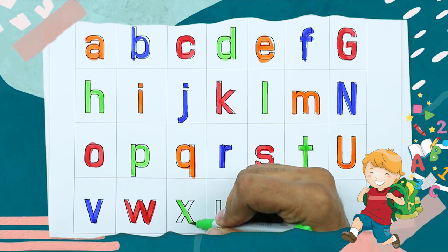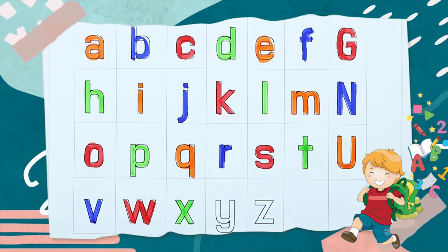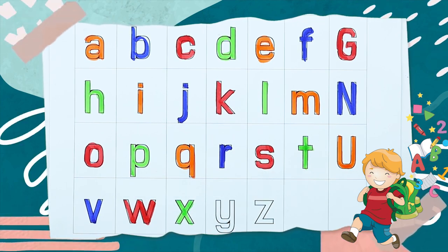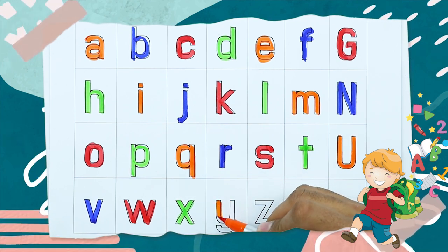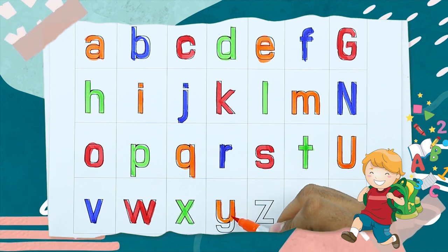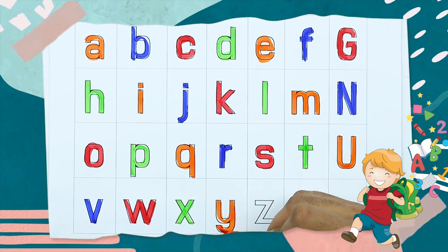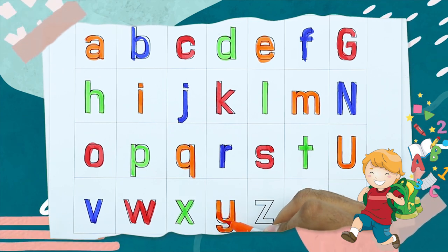X, small x with green color, X for xylophone. Y, Y for yak, it's small y with orange color.